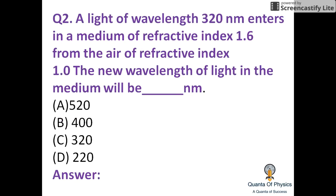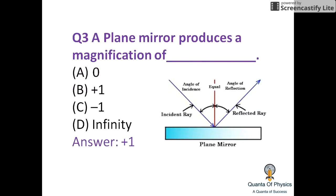Light of wavelength 320 nanometers enters a medium of refractive index 1.6 from air with refractive index 1.0. The new wavelength of light in the medium is calculated as lambda divided by refractive index: 320 divided by 1.6, which is approximately 200 nanometers. The answer is 200 nanometers.